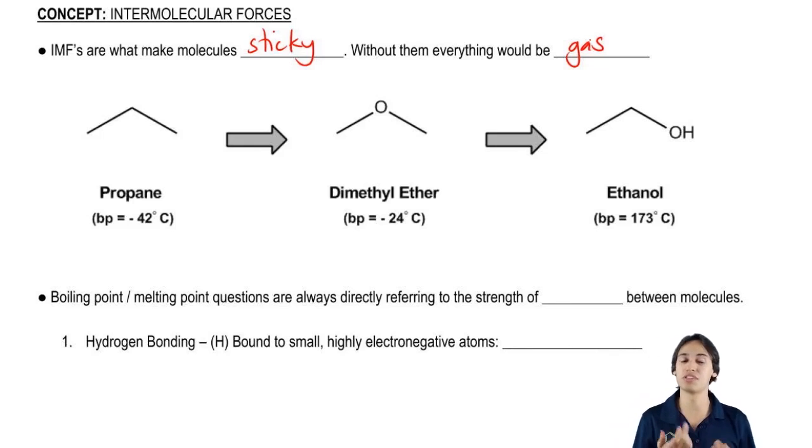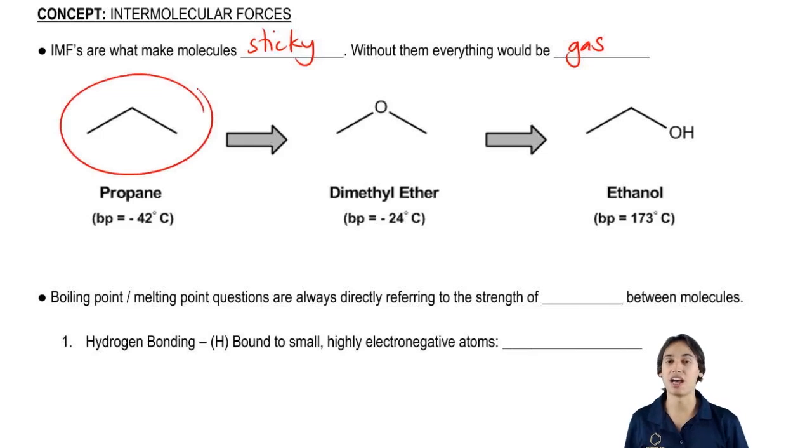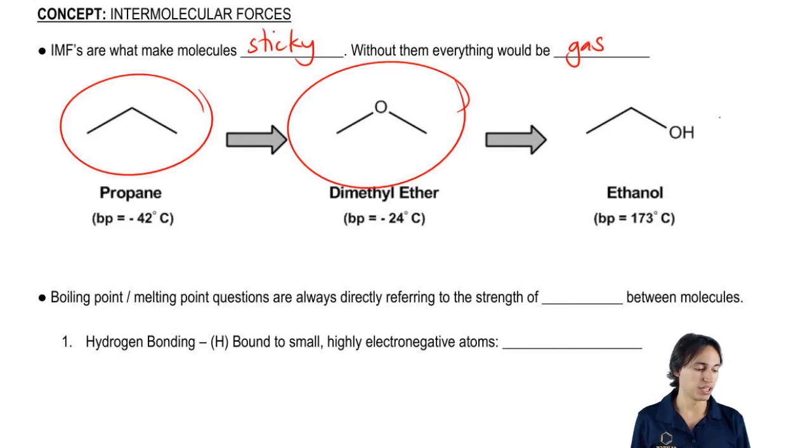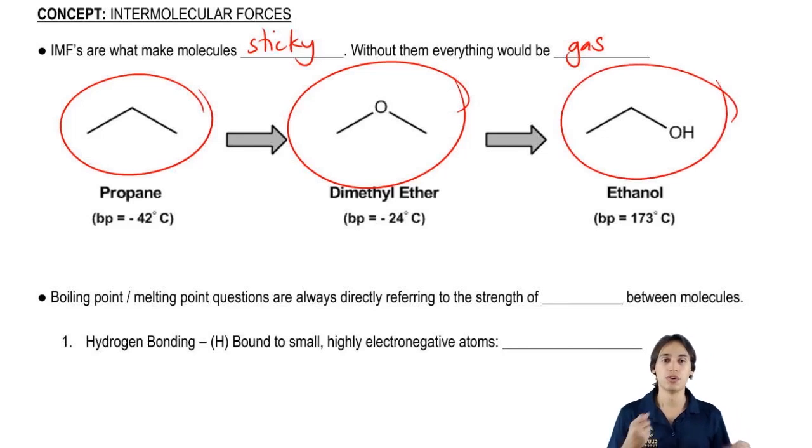But actually it turns out to be very different. So here we have a three carbon molecule. Here we have a two carbon molecule with one oxygen. And here I also have a two carbon molecule with one oxygen. So these are very similar looking molecules and very similar shapes, and yet their boiling points are vastly different.